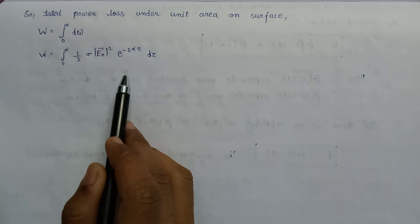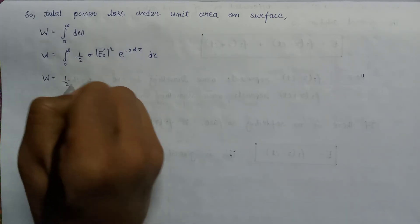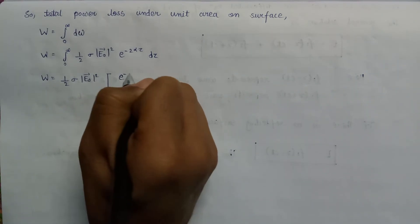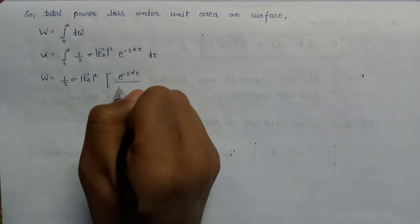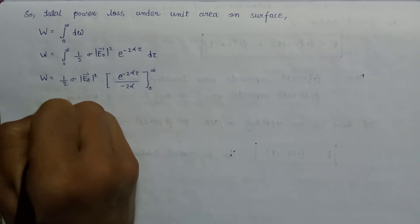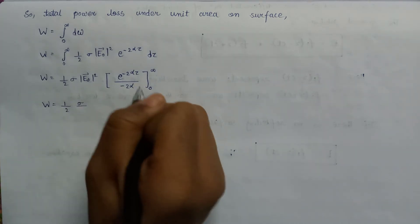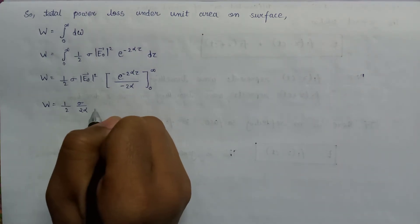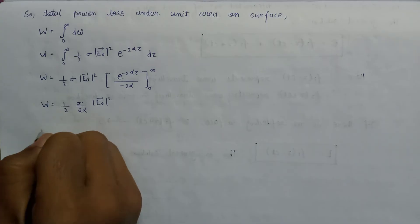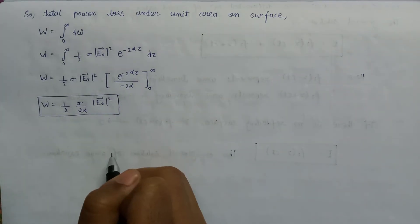Here is the expression for the total power loss per unit area. Integrating from zero to infinity, the value of W — the total power loss — equals sigma over 2 alpha, times E0 squared. The integration of e to the power minus 2 alpha z from zero to infinity is carried out, yielding the factor of 1 over 2 alpha.